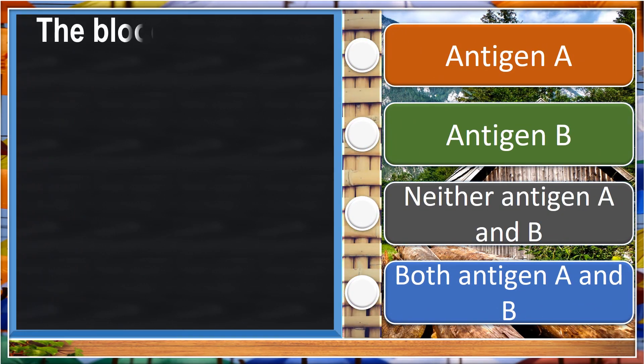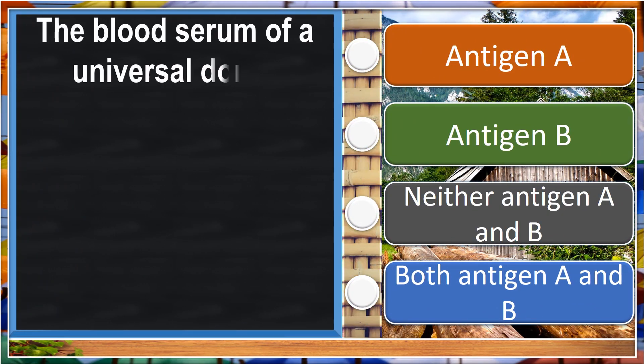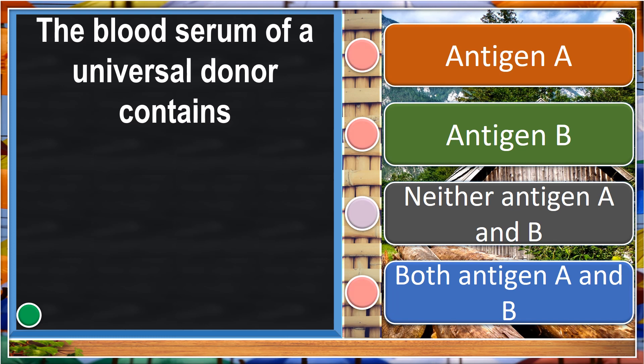The blood cell of a universal donor contains no antigen A and B.